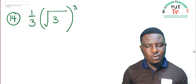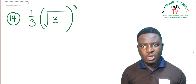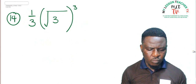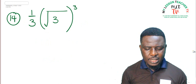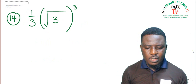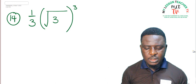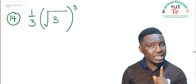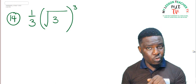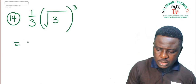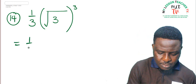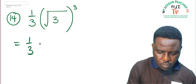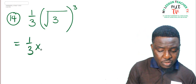The last question: one-third times (root 3) cubed. Note that (root 3) cubed means root 3 multiplied by itself 3 times: root 3 times root 3 times root 3. Root 3 times root 3 = root 3 squared = 3. So this equals one-third times 3 times root 3.